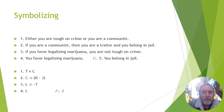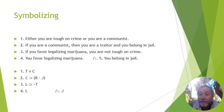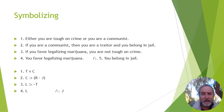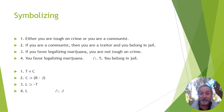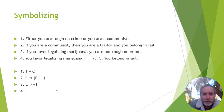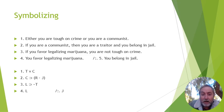Premise two: 'if you're a communist, then you are a traitor and you belong in jail.' We have a comma followed by 'then,' so it's a conditional. The antecedent is C (you are a communist). The consequent is compound: 'you are a traitor and you belong in jail,' which is a conjunction — R and J. So premise two is: if C, then (R and J).